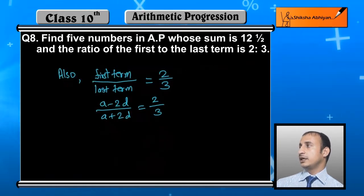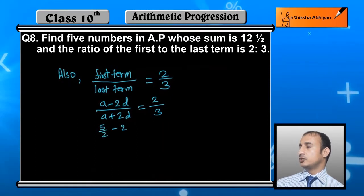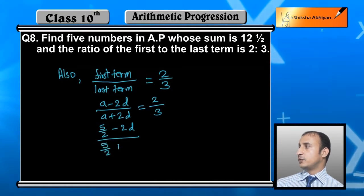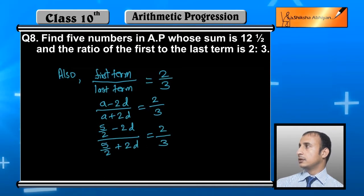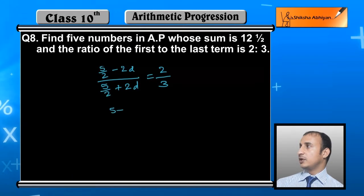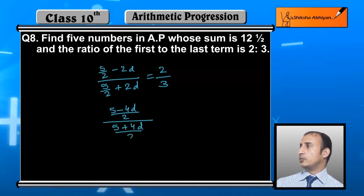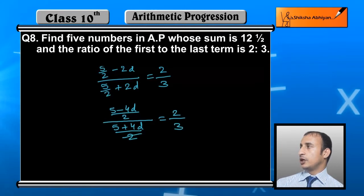Now further इसे solve करेंगे। a की value 5 by 2 रख देते हैं जो हमने अभी obtain की। So (5/2 minus 2d) upon (5/2 plus 2d) equals 2 upon 3। LCM लेंगे — numerator बनेगा (5 minus 4d) upon 2 and denominator (5 plus 4d) upon 2। This simplifies to 2 upon 3 and the 2s cancel।